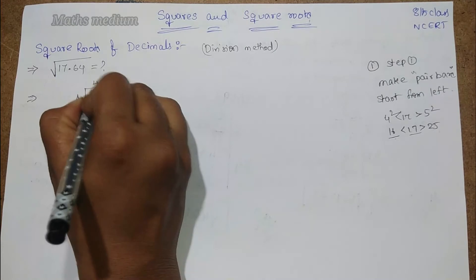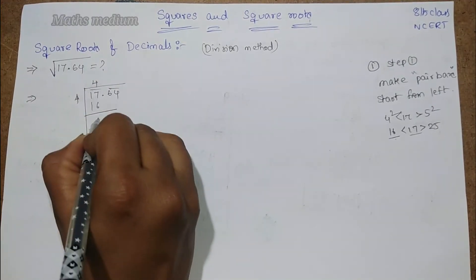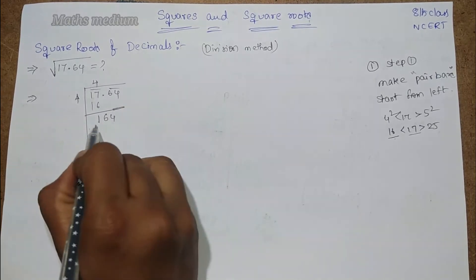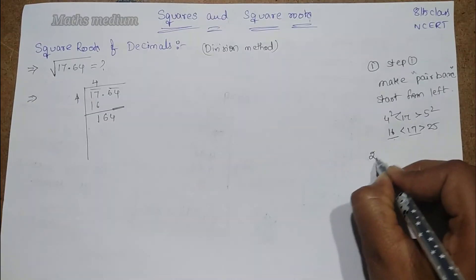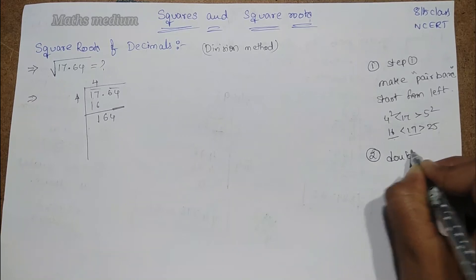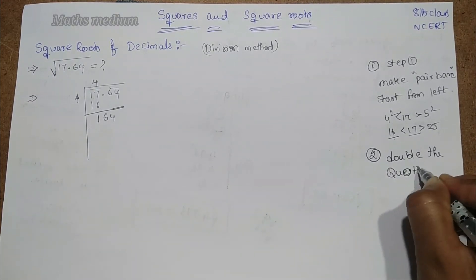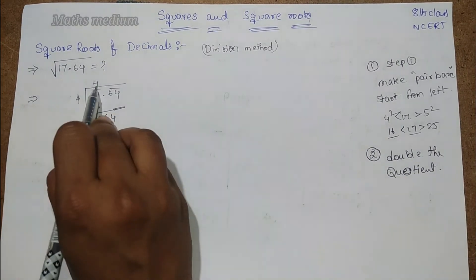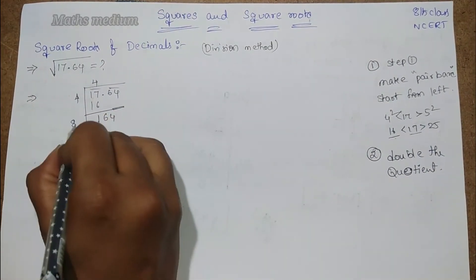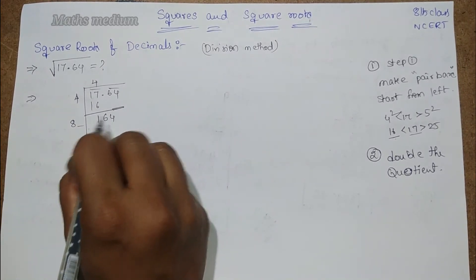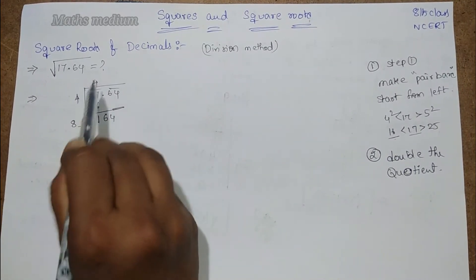4. 4's are 16. Here, 1 is left. 1, 6, 4. Now, take the total number 164. Second step is double the quotient. Here, 4 is, 4, 2's are 8. Now, left the blank. Now, 164 is divisible with one number. That is, with the here and here also. Now, what is the number here?